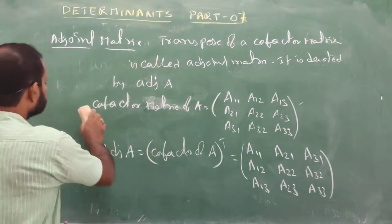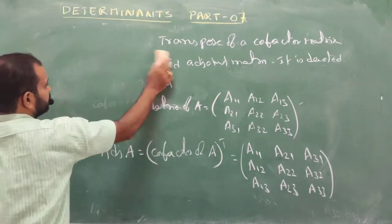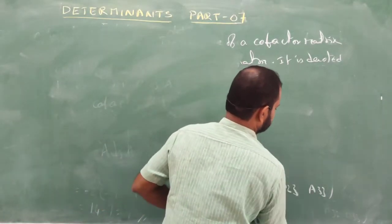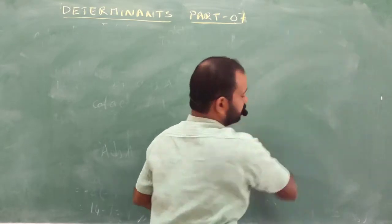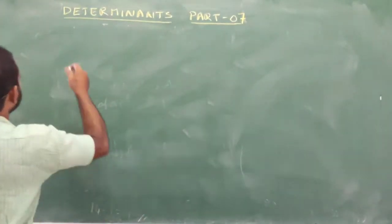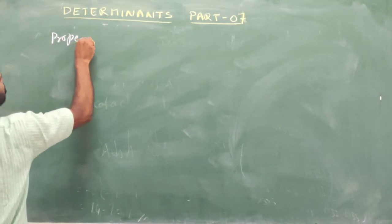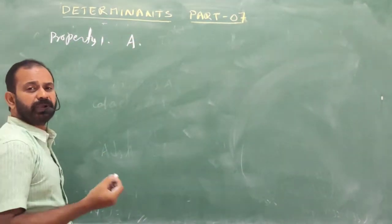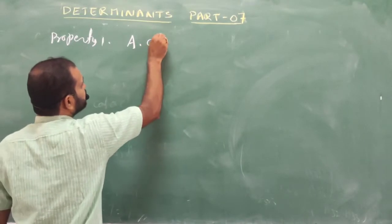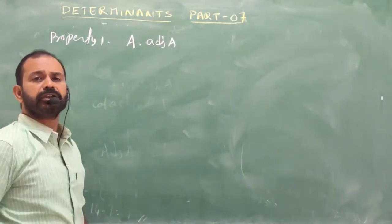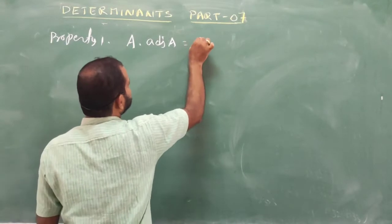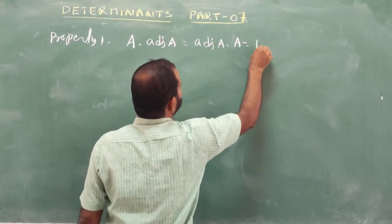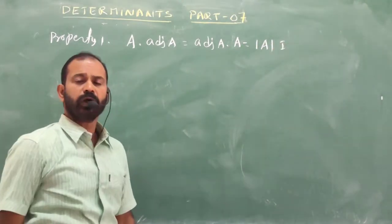Now let me come to the properties. Property 1: A multiplied by adjoint A equals adjoint A multiplied by A, which equals |A| times I.